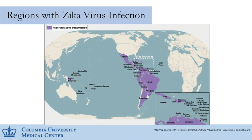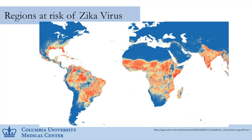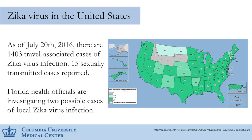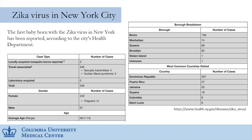Maps show the regions affected and areas at risk for endemic Zika virus transmission based on mosquito presence. In the United States as of July 20th, there are 1,403 travel-associated cases and 15 sexually transmitted cases. Florida health officials are investigating two locally acquired cases, and we're going to see more and more endemic cases specifically in that region.